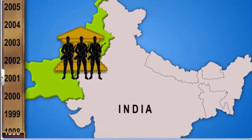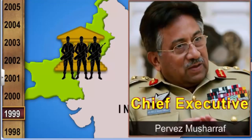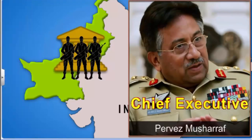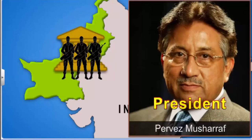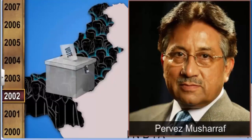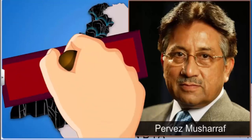After the coup in October 1999, General Musharraf declared himself the chief executive of the country. Later, he changed his own designation to president. In 2002, he held a referendum that granted him a five-year extension. However, it was alleged that there had been fraud in the referendum.